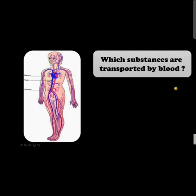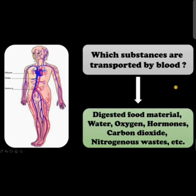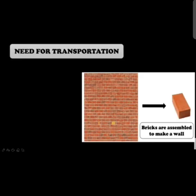The substances transported by blood include digested food materials, water, oxygen, hormones, carbon dioxide, nitrogenous waste, and so on. These are the substances which are transported by the blood.